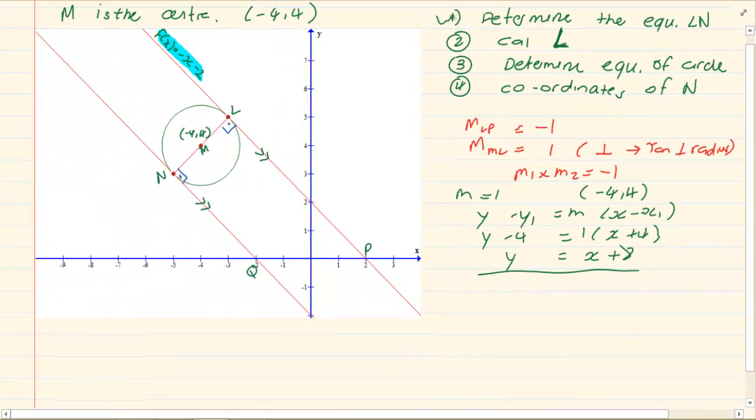The next question says calculate L. Now L is where the two coordinates are meeting. And when the two coordinates are meeting then we do simultaneous equations. So the two graphs are basically cutting each other. Now what are the two equations we are going to work with?